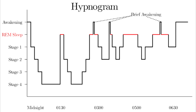Describe the N1 stage of sleep. The N1 stage of sleep is the light sleep. The EEG waveform seen in stage N1 is theta.